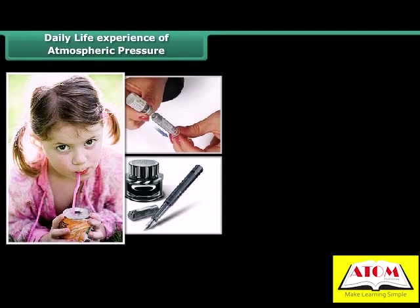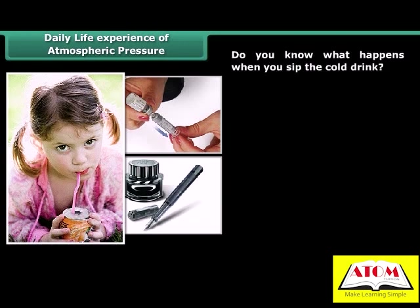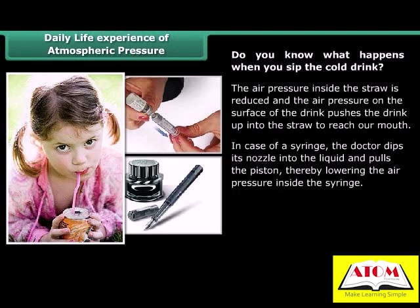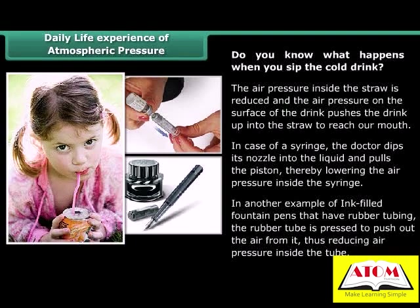Daily life experiences of atmospheric pressure: Some common examples are sipping cold drink through a straw, dipping the nozzle of a syringe in liquid, and filling ink in fountain pens. When you sip cold drink, the air pressure inside the straw is reduced, and the air pressure on the surface of the drink pushes the drink up into the straw to reach your mouth. In a syringe, the doctor pulls the piston, lowering the air pressure inside. In ink-filled fountain pens, the rubber tube is pressed to push out air, reducing air pressure inside the tube.